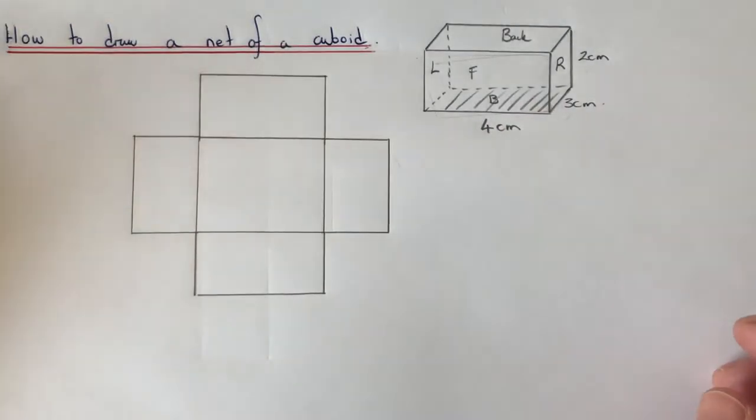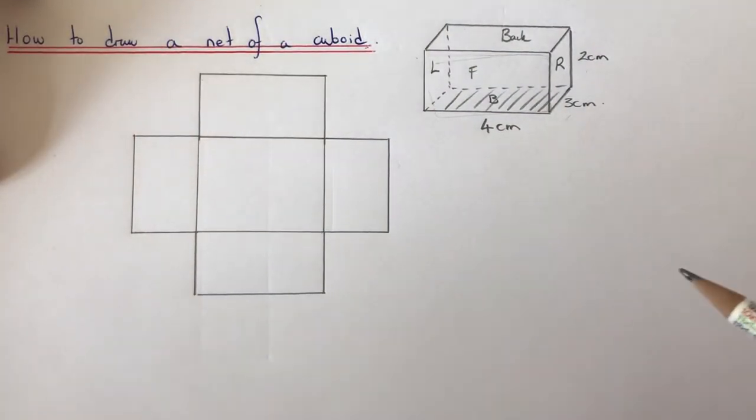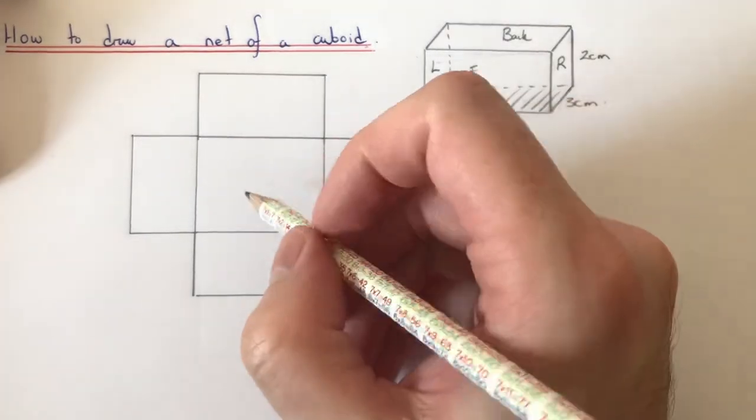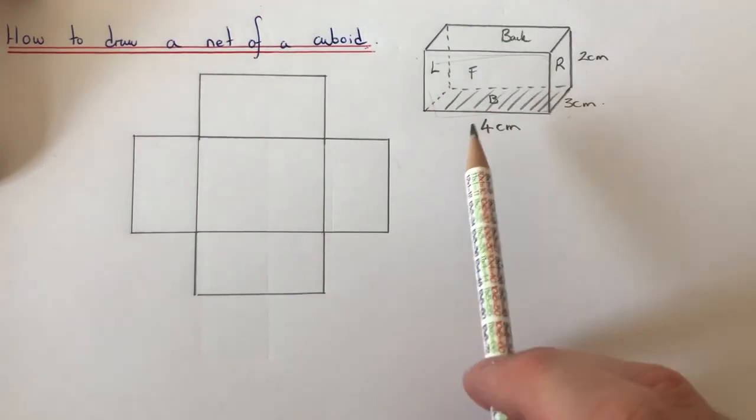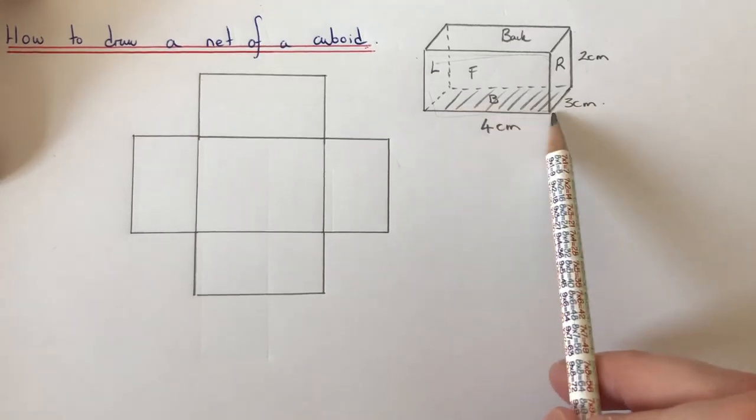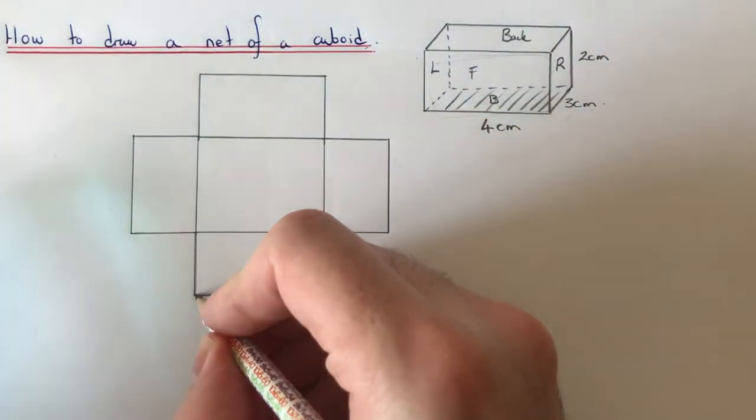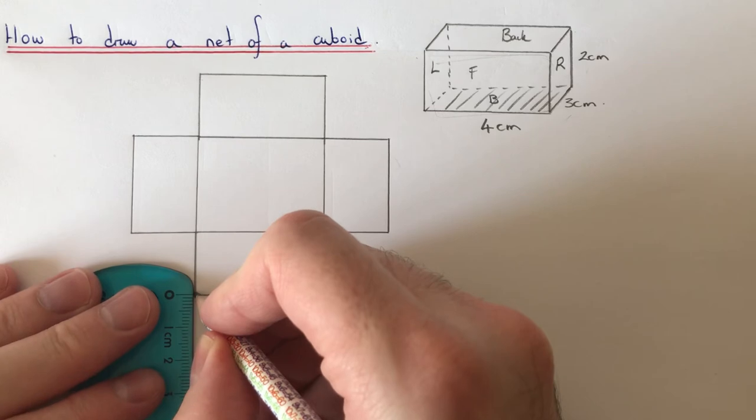Okay, and then the final one to do is the top of the box. So the top of the box matches the bottom of the box here which we started off with. So the bottom of the box was four by three, so we'll put this one underneath.